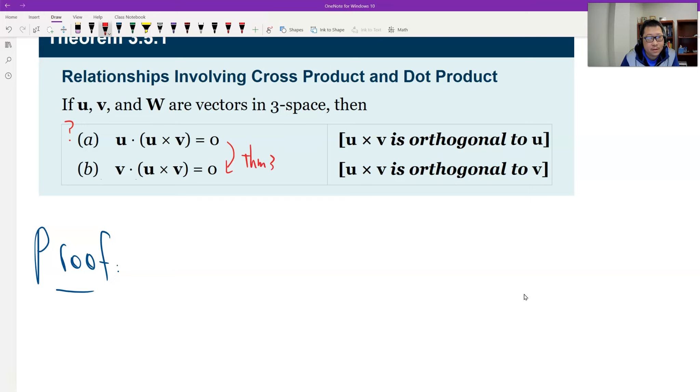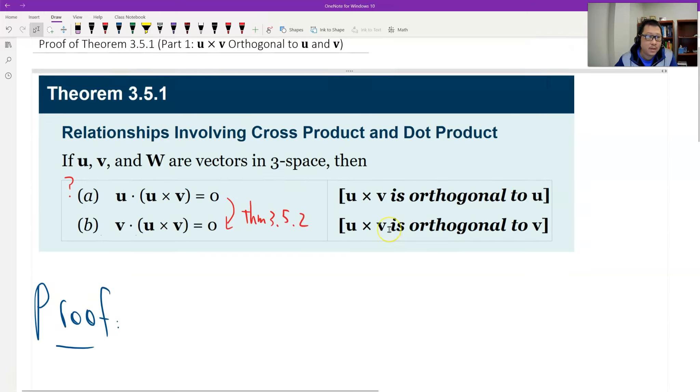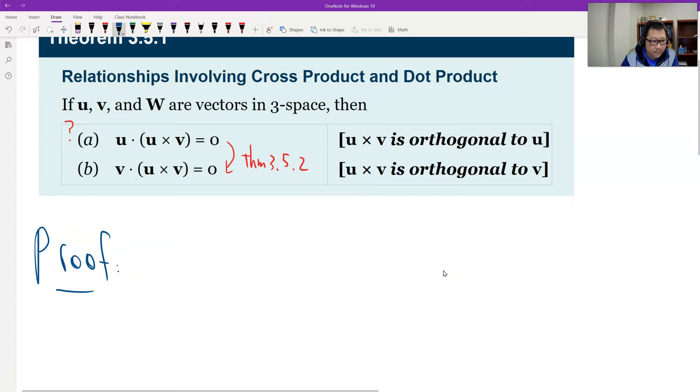For b, we can use theorem 3.5.2. If a is true, then we work on this. So v vector dot u cross v should be what? We can switch the order. That's theorem 3.5.2. When we switch, we get a negative. The negative is a negative one times, so we can factor it out at the very beginning. Therefore, this we will get a negative.